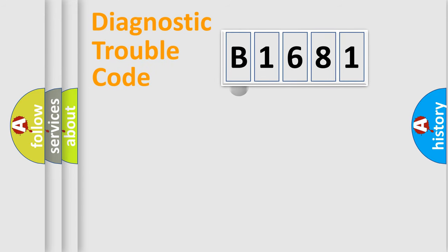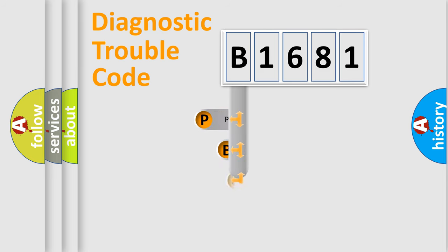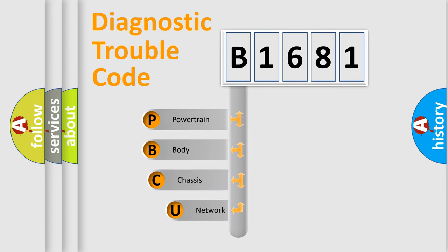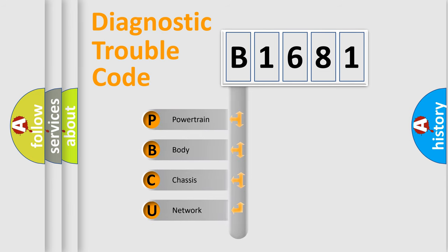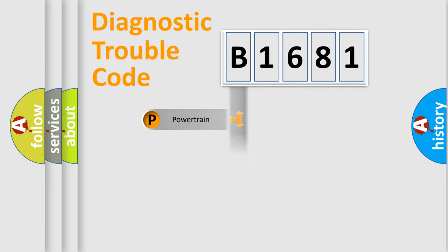Let's do this. First, let's look at the history of diagnostic fault code composition according to the OBD2 protocol, which is unified for all automakers since 2000. We divide the electric system of the automobile into four basic units: Powertrain, Body, Chassis, and Network.